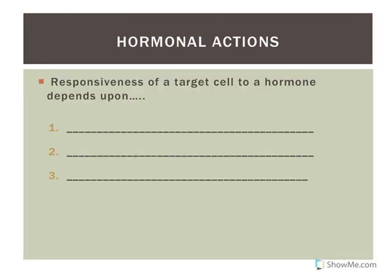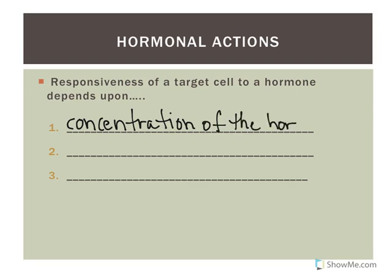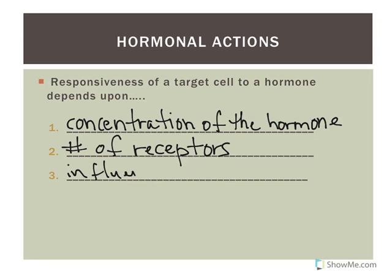The endocrine system releases substances called hormones. The responsiveness of a target cell to a hormone depends on three things: the concentration of the hormone in the bloodstream, the number of receptors on the target cell — no receptors means no effect, more receptors means a greater effect — and third, the influences exerted by other hormones.